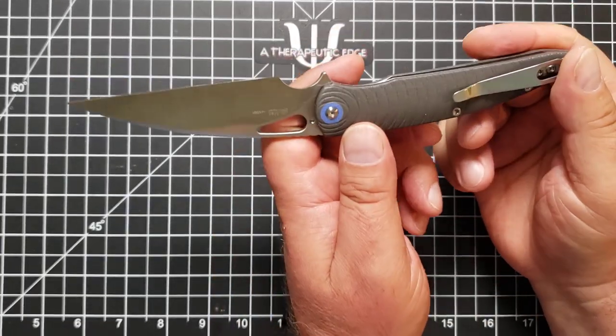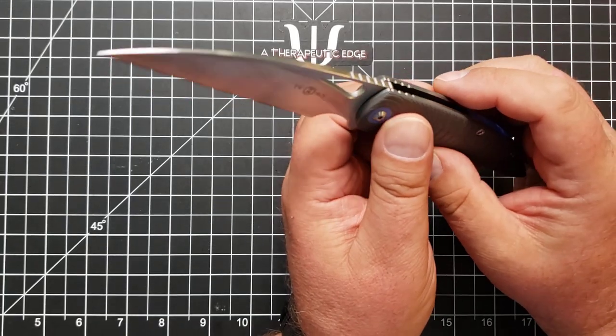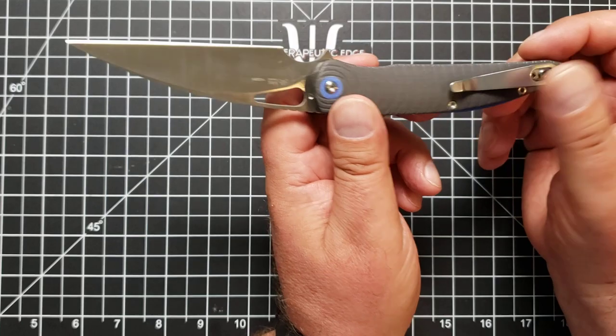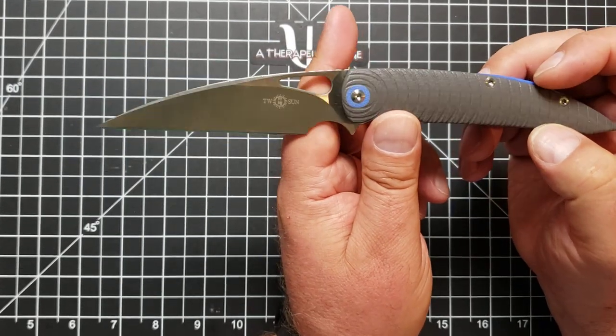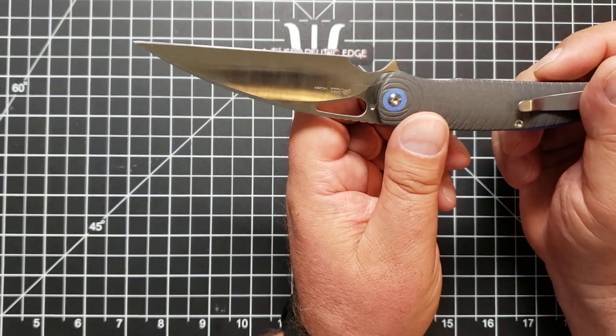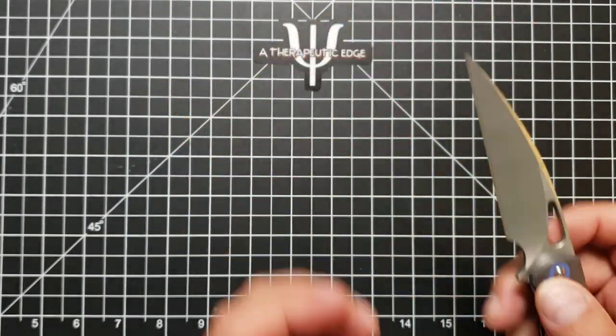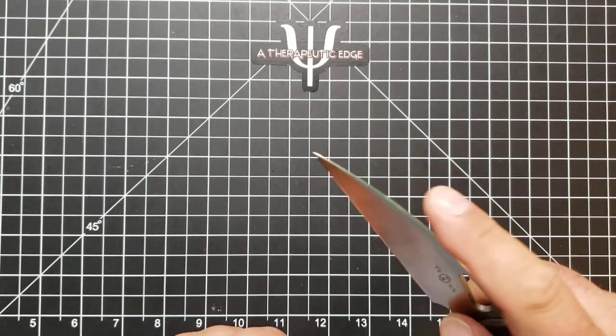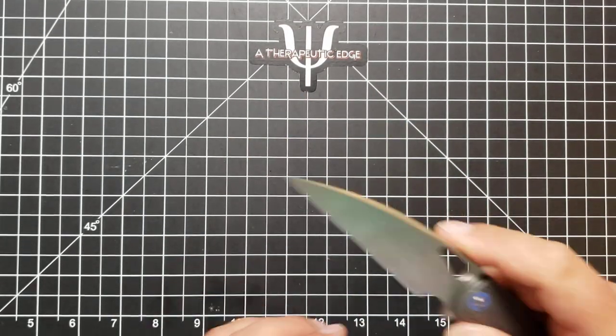Now, I've used this thing in basic EDC tasks, everything from, as I always say, cordage to boxes, packaging. I've even cut up some food with it. Again, 14C28N is an excellent steel for that because it is very, very rust and stain resistant. This knife has served me incredibly well because of this blade shape. It is marvelous for opening packages. I mean, you can just poke that tip into the box and just draw it back. And it slices beautifully.